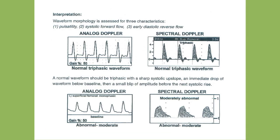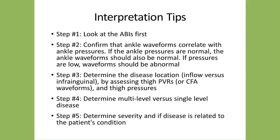With analog waveforms, we assess waveform morphology including pulsatility, forward flow, and early diastolic reverse flow. A moderately abnormal waveform shows loss of reverse flow, the baseline comes up, and there's broadening. To interpret a study: start with the ABIs, then confirm that ankle waveforms correlate with ankle pressures — normal pressures should have normal waveforms and low pressures should have abnormal waveforms. Then determine the disease location using three or four cuffs, differentiating inflow from infrainguinal disease. Assess the high thigh PVRs or common femoral analogs and thigh pressures, determine other levels involved, and assess severity.